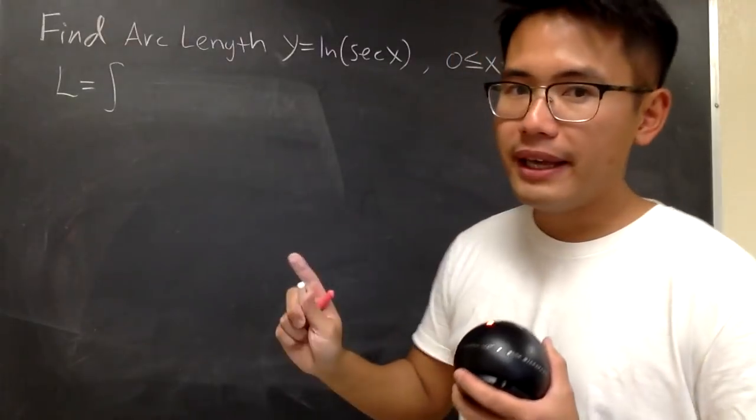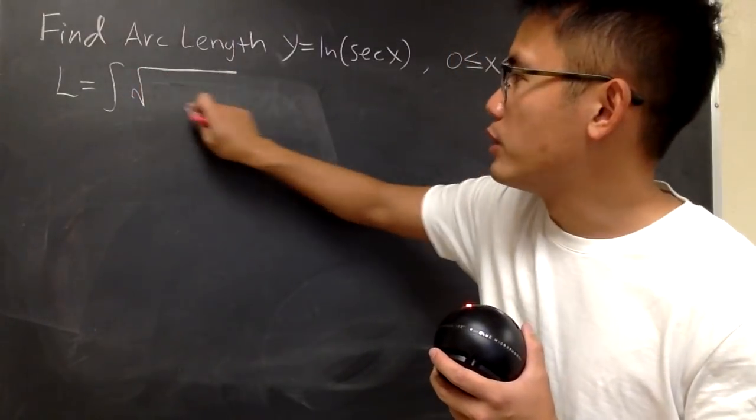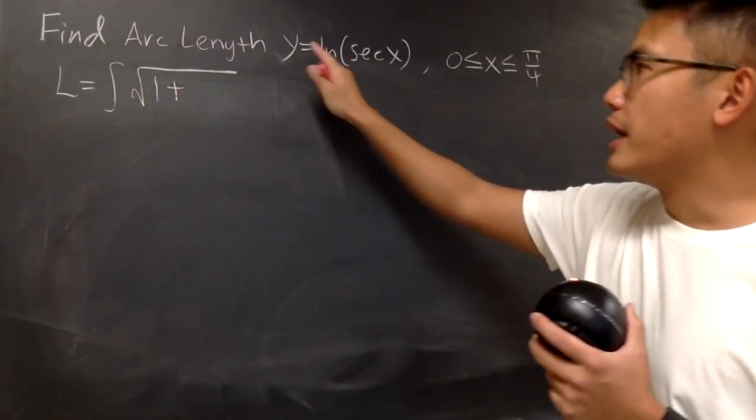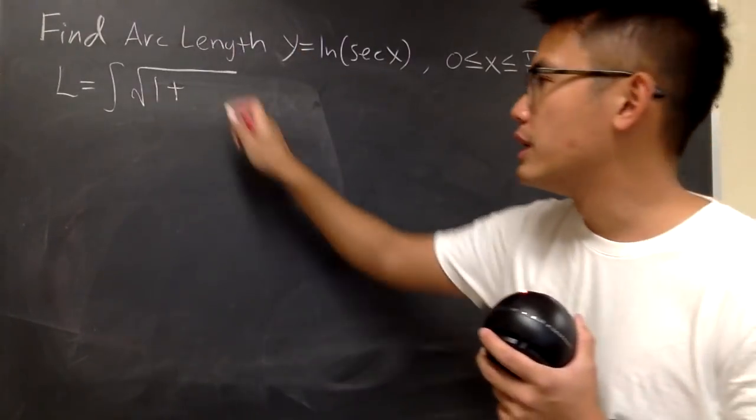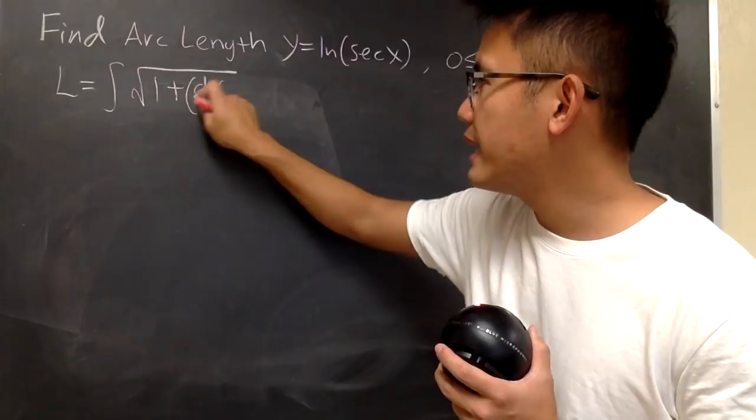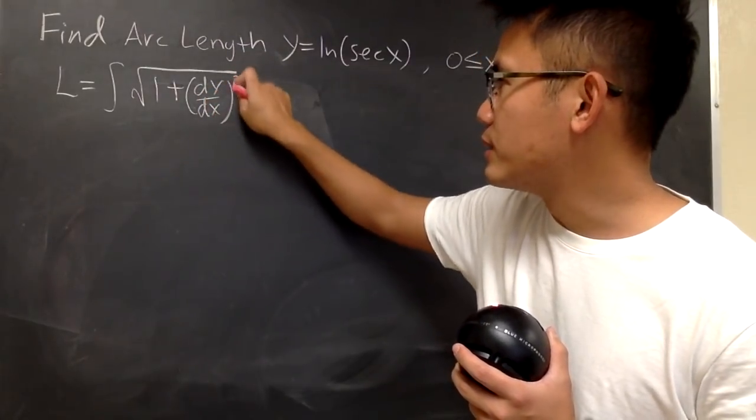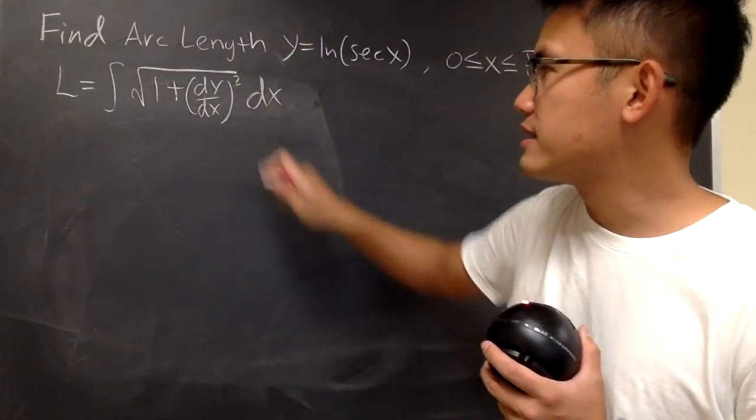L for the arc length is going to be the integral. You open the square root, 1 plus—here we are given y as a function of x, so we need to get dy/dx and then square that, and then you have dx on the outside.